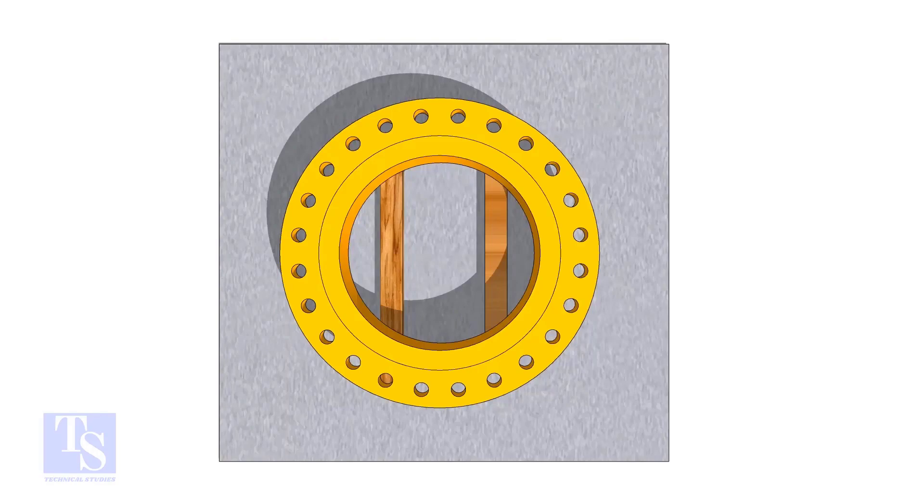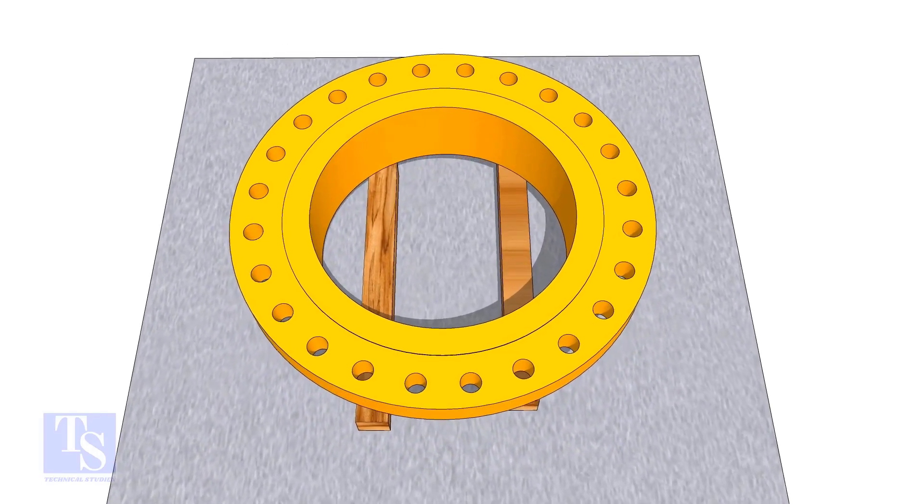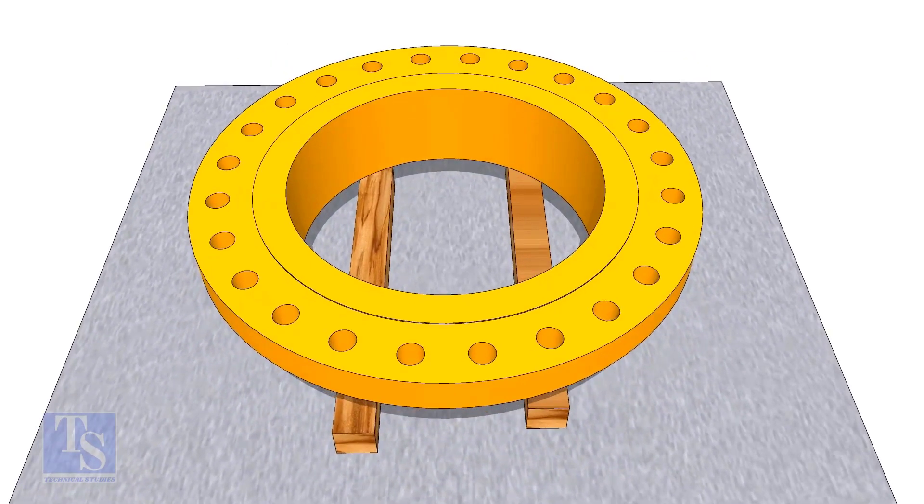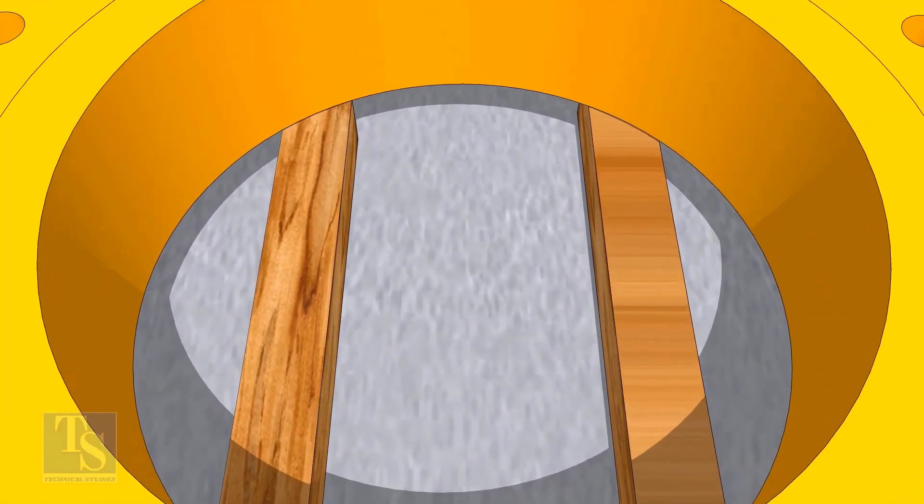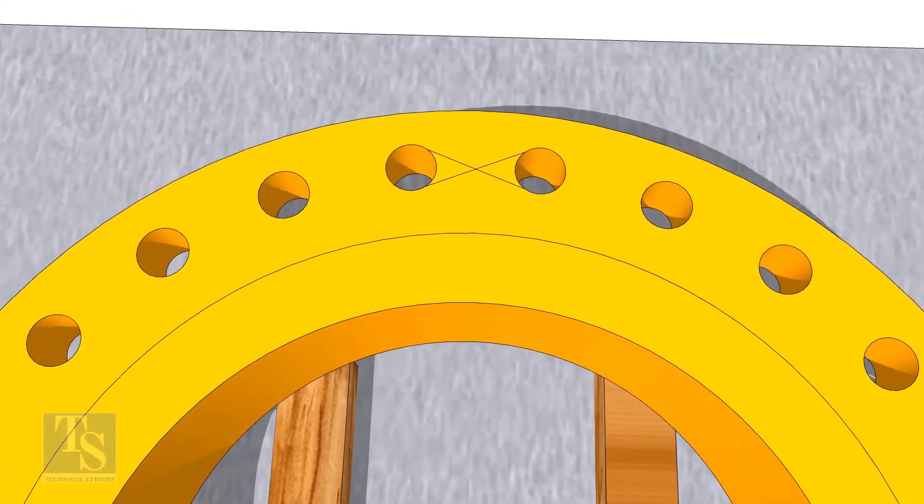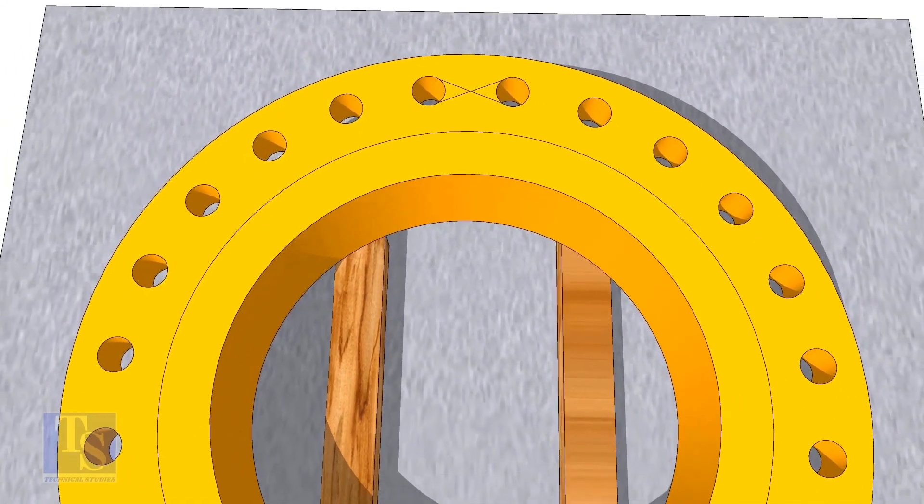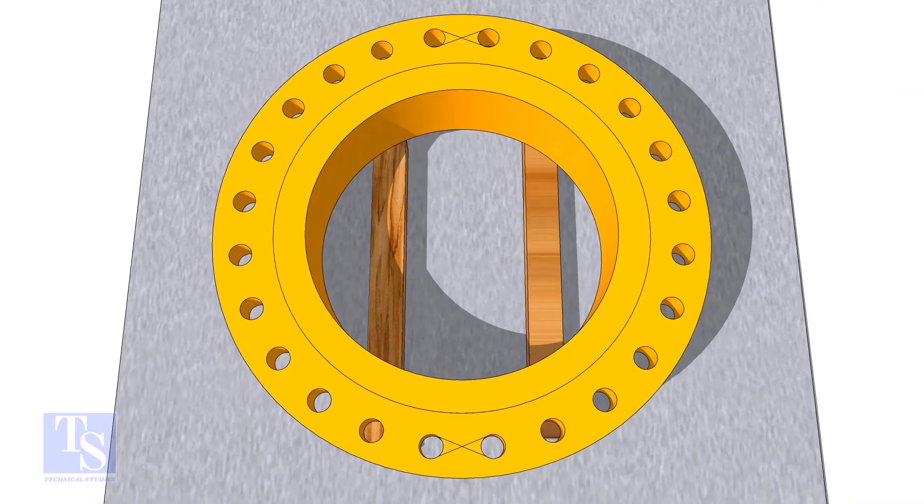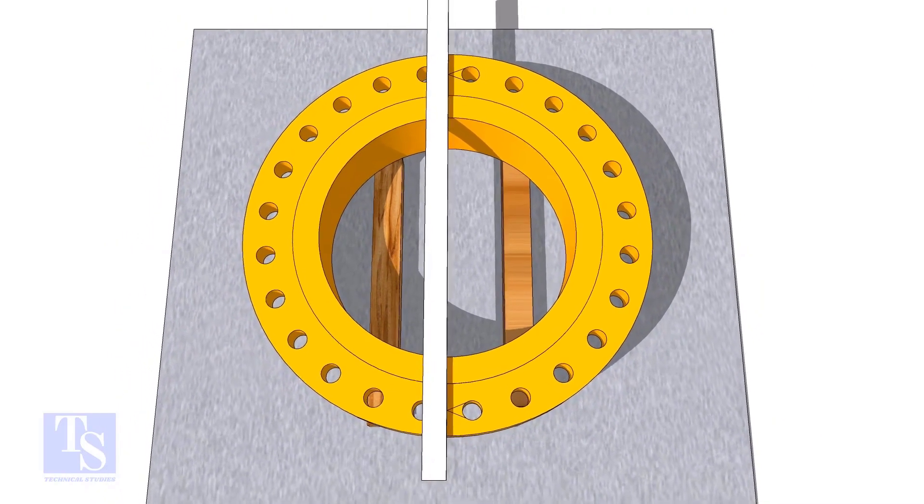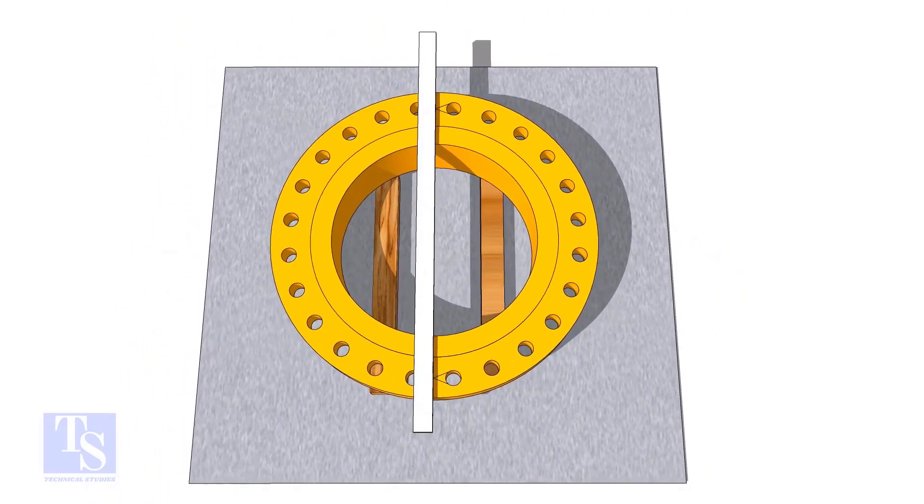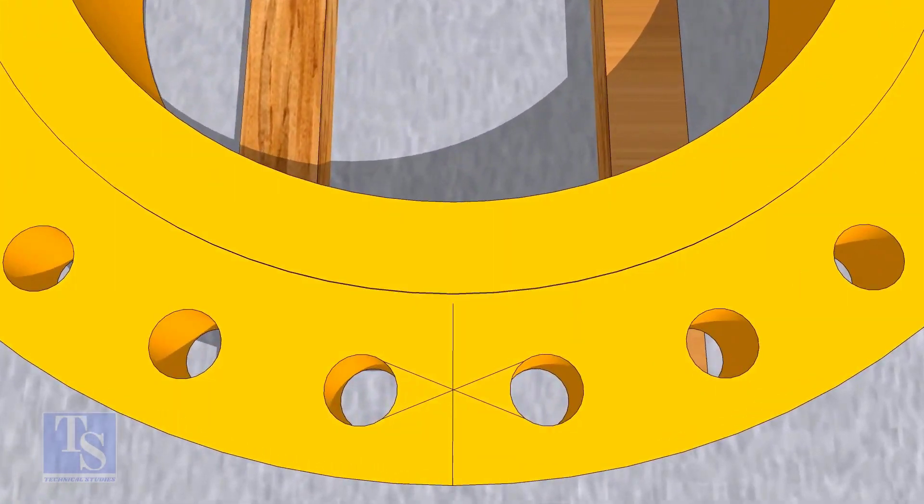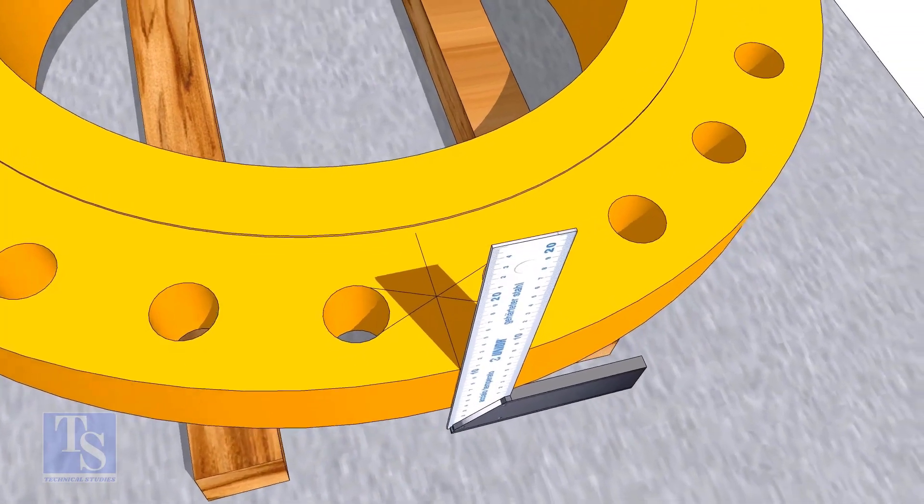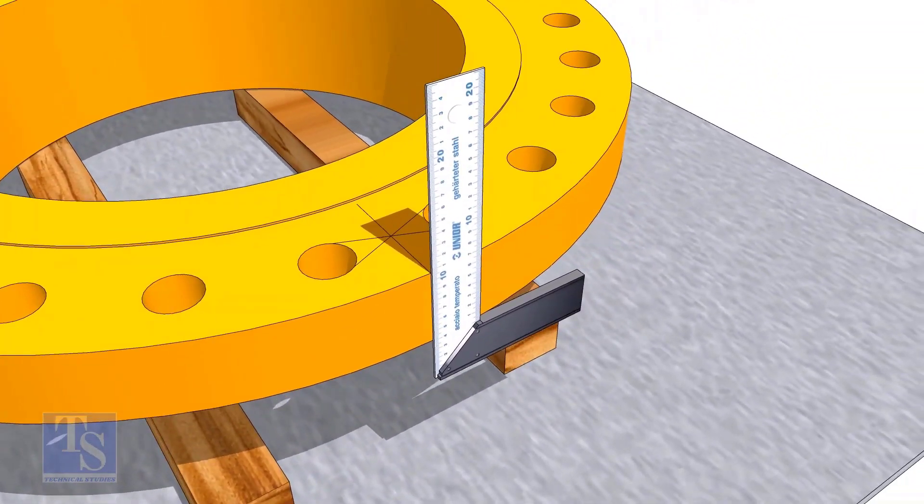In the second method, you need to mark the center line of the flange. Draw tangential lines on two adjacent holes on opposite sides. Draw a line as shown. Transfer the center line to the side of the flange.